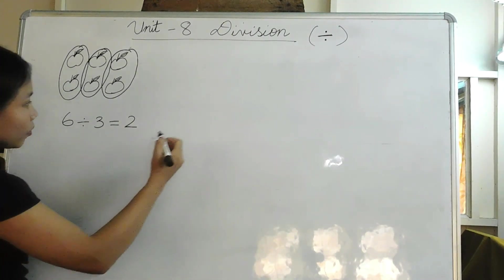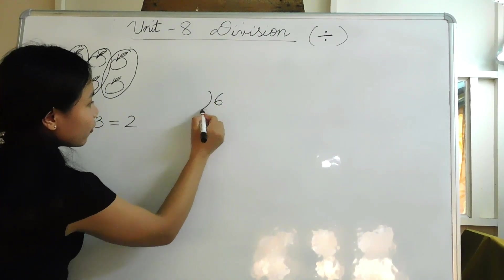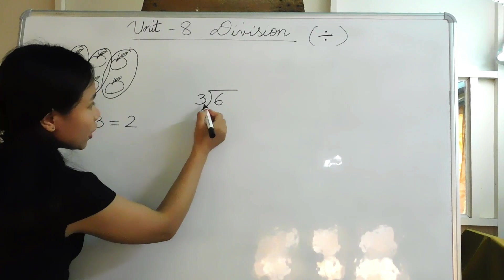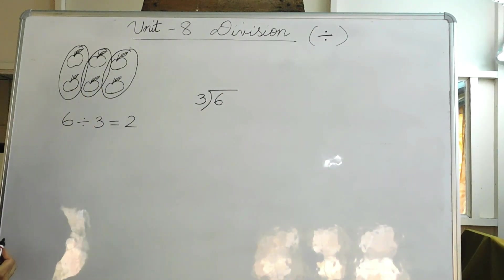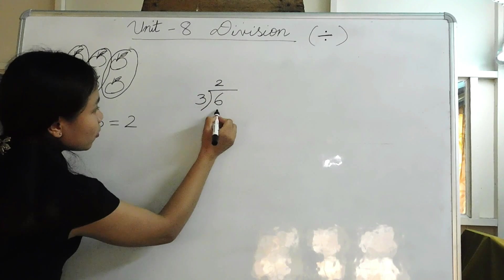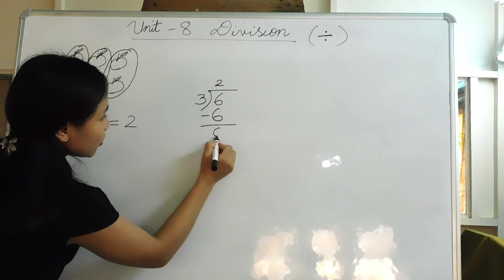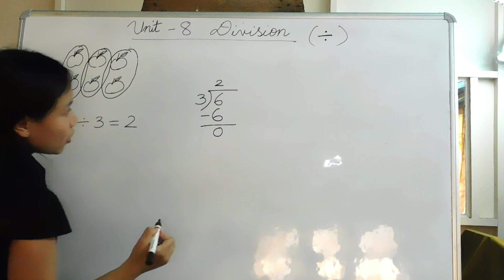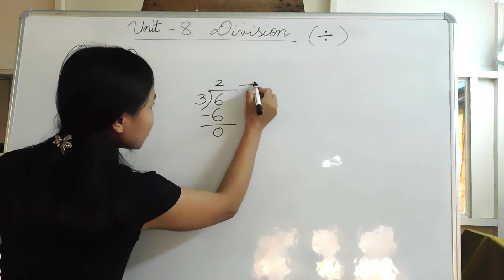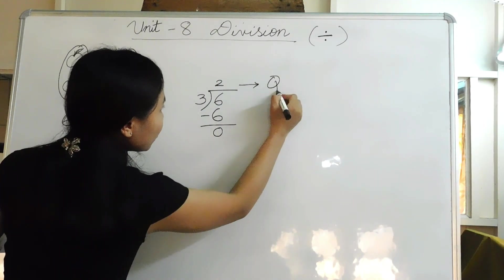We can also calculate like this: 6 divided by 3 — 3 how many times is equal to 6? 3 two times is equal to 6. 6 minus 6 is 0. The result we get after dividing is called the quotient.